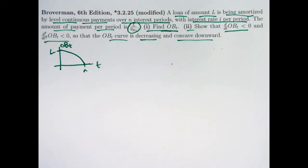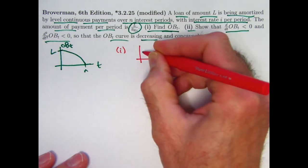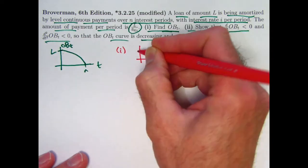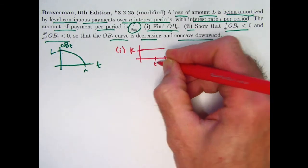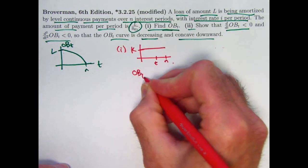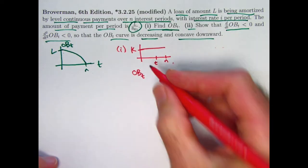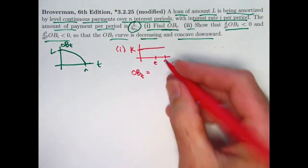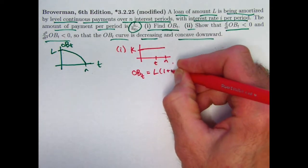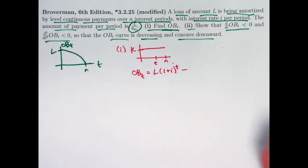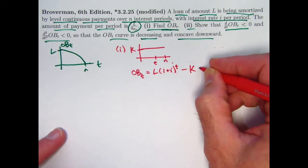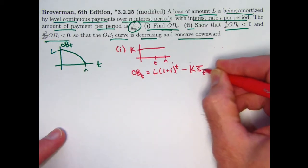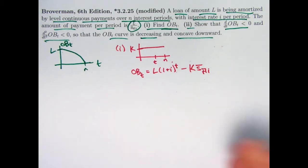Let's think about part one. You have this level payment stream for N periods. You could call the payment amount k if you like. To find the outstanding balance as a function of time, we can use the retrospective method — meaning you look back in time, take the original loan amount and accumulate it to time t by multiplying by (1+i)^t, then subtract the accumulated value of all payments to that point: the rate of payment times the future value s-bar sub t at interest rate i.